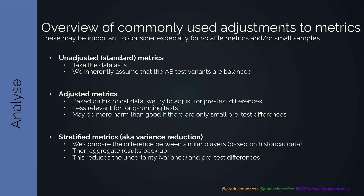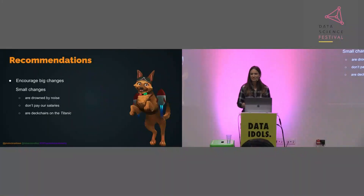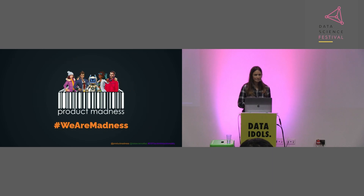We also have stratified metrics for variance reduction — we compare differences between similar players based on their historic data, aggregate the results up, and this reduces the uncertainty or variance in pretest differences. To end with some recommendations: we would always recommend big changes — small changes are drowned out by noise. We should avoid tests done on tiny sample sizes, that are essentially fishing expeditions, or where the counterfactual is not viable.